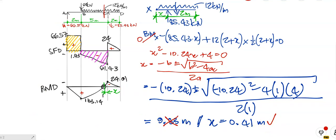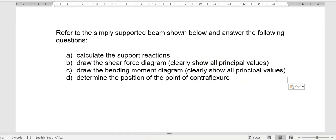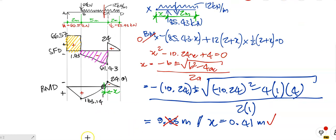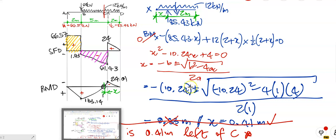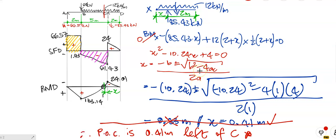The question says determine the position of the point of contraflexure — you must now deduce the answer. Therefore, the point of contraflexure is 0.41 meters to the left of C. Or if you want, you can say it is 2.41 meters from D — because you can only go left. A lot of students just stop at X equals 0.41 and don't state that conclusion. You must deduce the answer. So we know the crossover of the nature of the stresses is occurring 0.41 meters to the left of C, and that's where the lap must be sitting.